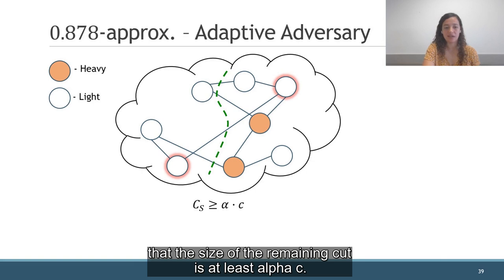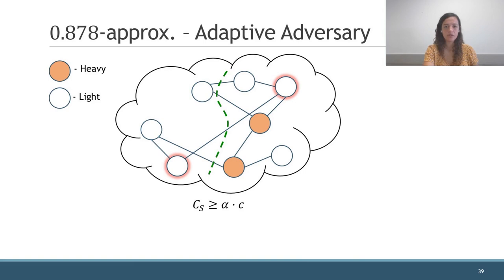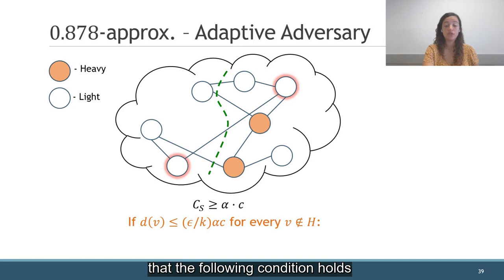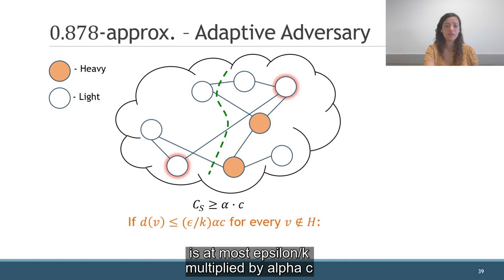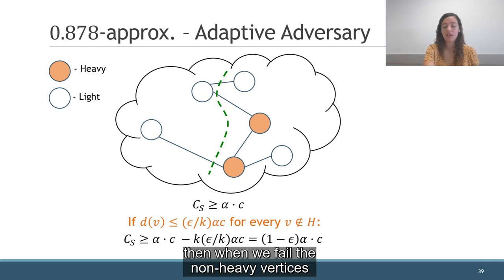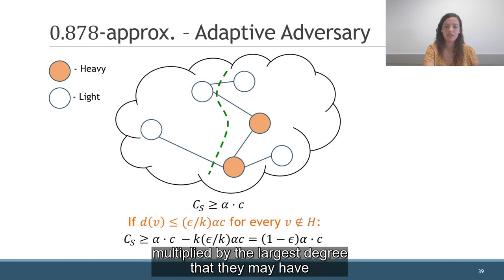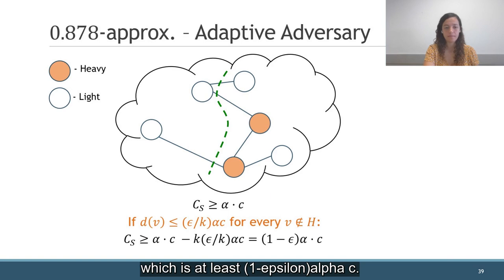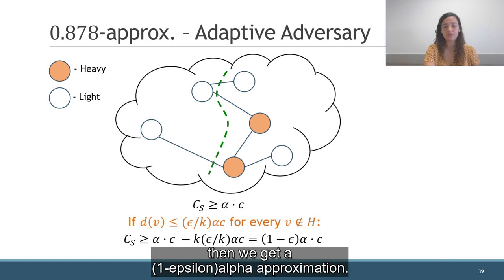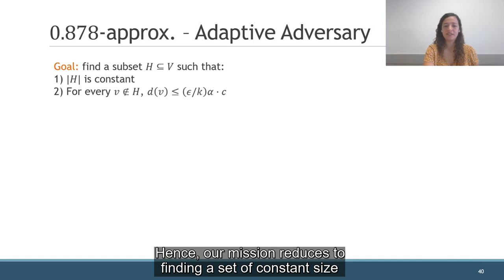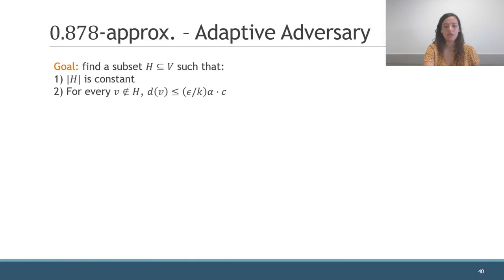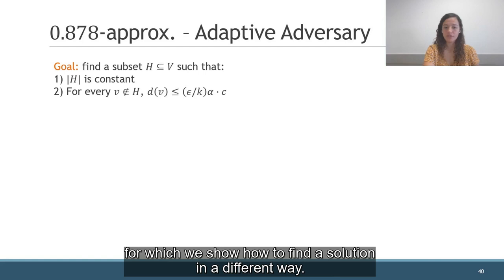Now, we can fail the non-heavy vertices. Let's assume that the following condition holds: the degree of every non-heavy vertex is at most epsilon over k multiplied by alpha*c. Then, when we fail the non-heavy vertices, we have that the size of the cut is at least alpha*c minus at most k non-heavy vertices multiplied by the largest degree they may have, which is at least (1 minus epsilon)*alpha*c. And since c is the optimal value, we get a (1 minus epsilon)*alpha approximation. Hence, our mission reduces to finding a set of constant size that satisfies the degree condition. We show how to find such a set, except for some types of graphs for which we show how to find the solution in a different way.